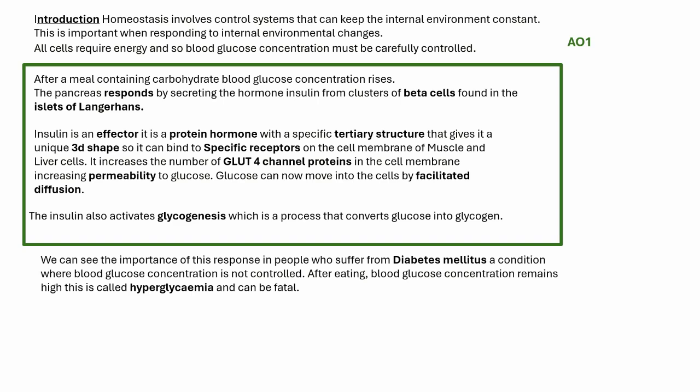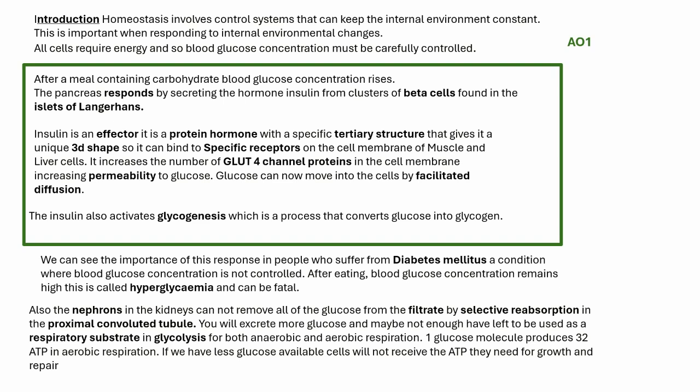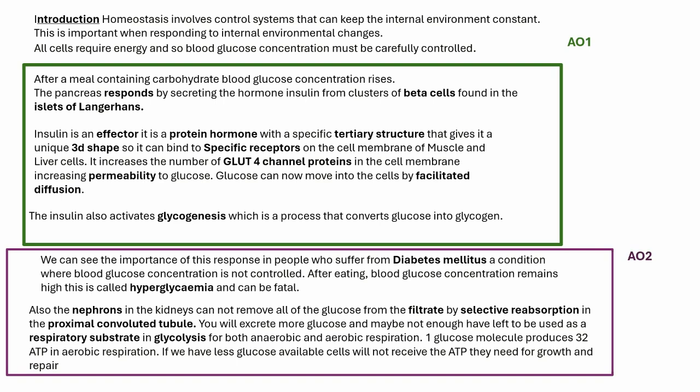We've only got about 40 minutes to construct this whole answer, so now moving to the AO2 application — why is this important? If we didn't control glucose, you could suffer from diabetes mellitus, a condition where blood glucose concentration isn't controlled, leading to hyperglycemia. Also, the nephrons in the kidneys can't remove all the glucose from the filtrate by selective reabsorption in the proximal convoluted tubule, so you'd excrete more glucose. Glucose is a respiratory substrate in glycolysis, so you'd end up with less ATP — needed for phosphorylation, muscle contraction, and breaking actin-myosin cross bridges.